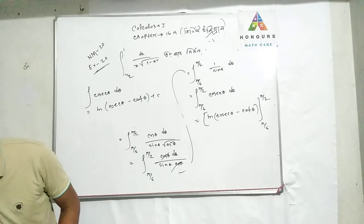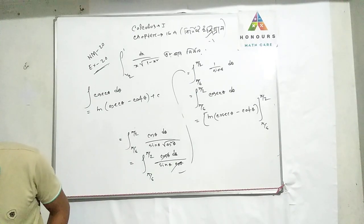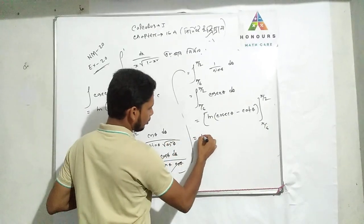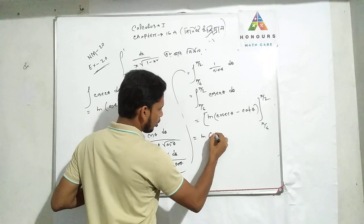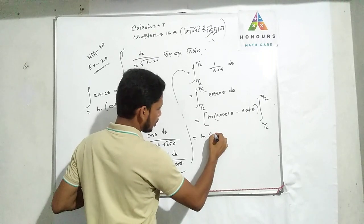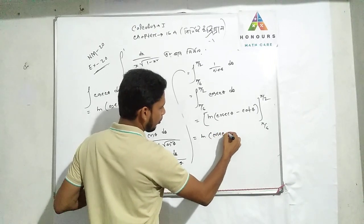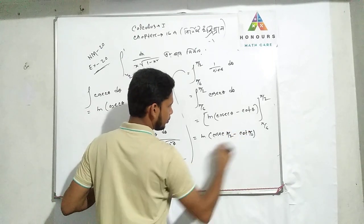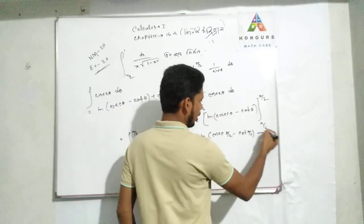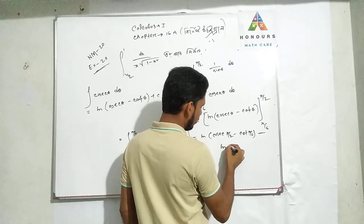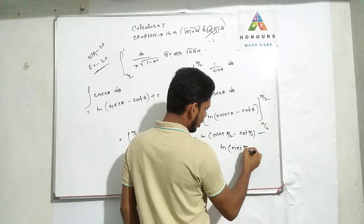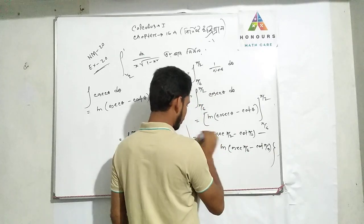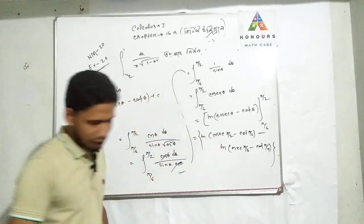The limits are pi/6 to pi/2. Now we evaluate: upper limit pi/2 minus lower limit pi/6. The result is cosec(pi/2) minus cot(pi/2), minus cosec(pi/6) minus cot(pi/6). Upper limit minus lower limit.